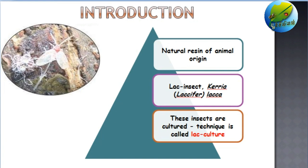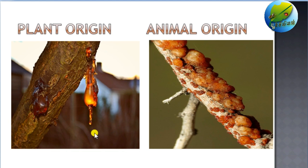Totally there are nine genera of lac insect, but only one — that is Kerria lacca or Laccifer lacca — is the only genus which produces recoverable or economic lac. Culturing these insects and producing lac commercially is called lac culture.